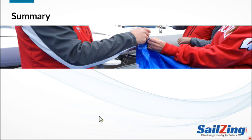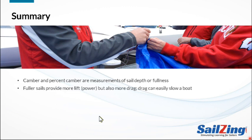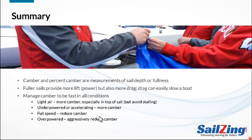I hope you took away at least a few pointers from this discussion. We've covered the following key points: camber and percent camber are measurements of sail depth or fullness. Fuller sails provide more lift or power, but also more drag, and drag can easily slow a boat down. You have to manage camber to be fast in all conditions. In light air, you want more camber — especially in the top of the sail — but you also need to avoid stalling. When underpowered or accelerating, you want more camber. When at full speed, you can reduce the camber. When overpowered, you need to aggressively reduce camber, and if possible, avoid spilling power by luffing the sail.